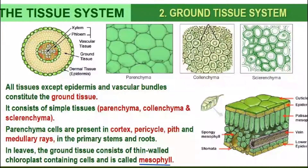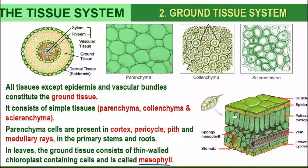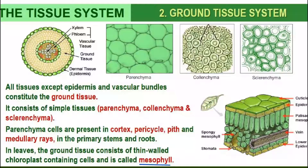This is the section of the leaf. When we take the section and view through the microscope, this is the diagram we can see. The ground tissue system is made up of parenchyma, colenchyma, and sclerenchyma — these are the simple tissues we have studied already.